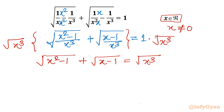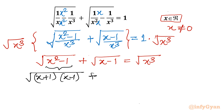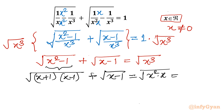Now I will use the algebraic identity. I can write x² − 1 as (x + 1)(x − 1). This second term remains as square root of (x − 1). And for x³, you can consider it as x² times x, so square root of x² is x, making it x times root x.